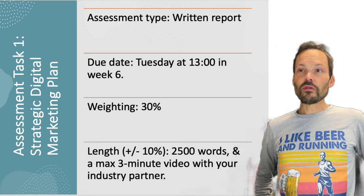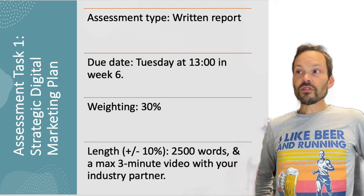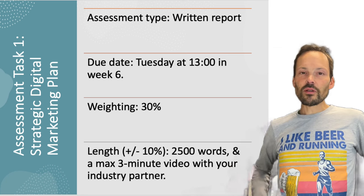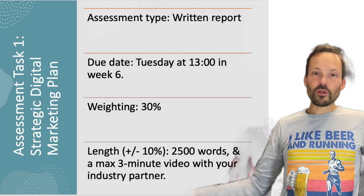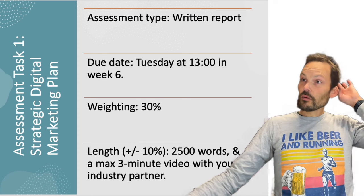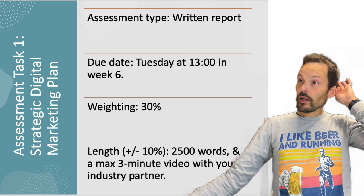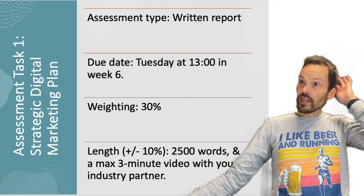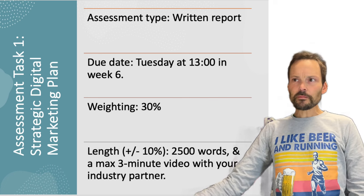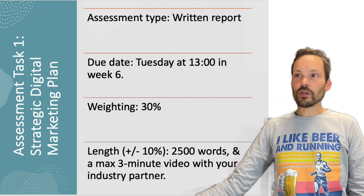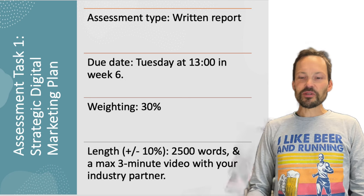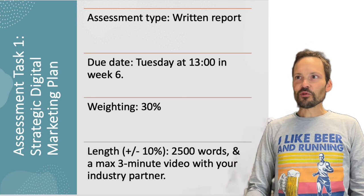It comes in the form of a written report due at 1 o'clock in week 6. It's worth 30%. The length of the assignment is 2,500 words, with the normal plus or minus 10%. If you're outside of that, penalties will apply. There's also a maximum 3-minute video you need to include with your industry partner, which I'll talk about more in the future slides.